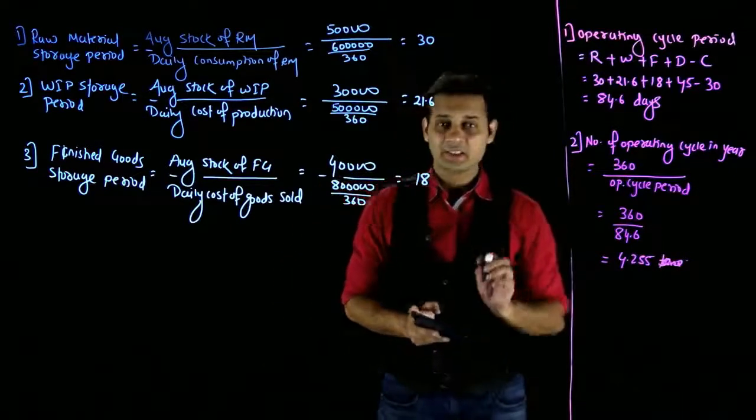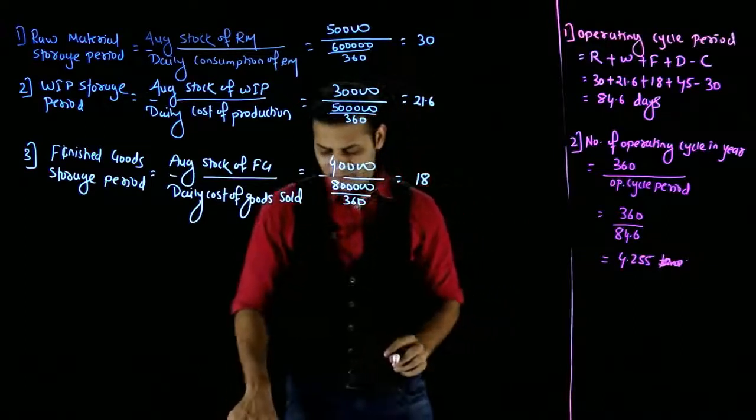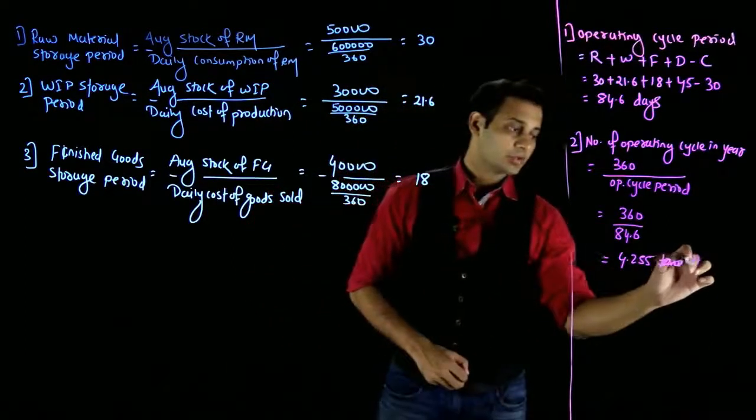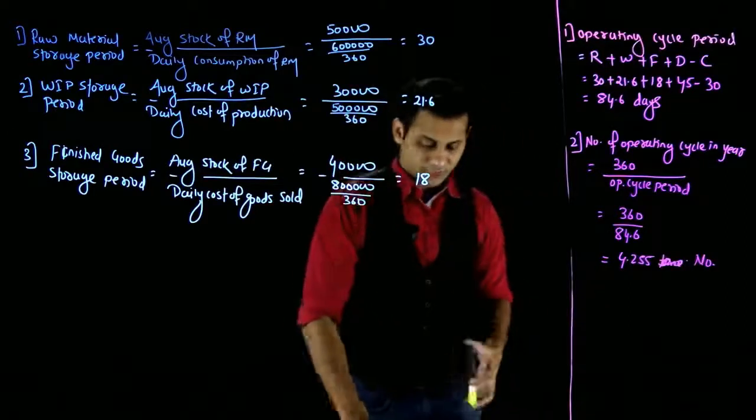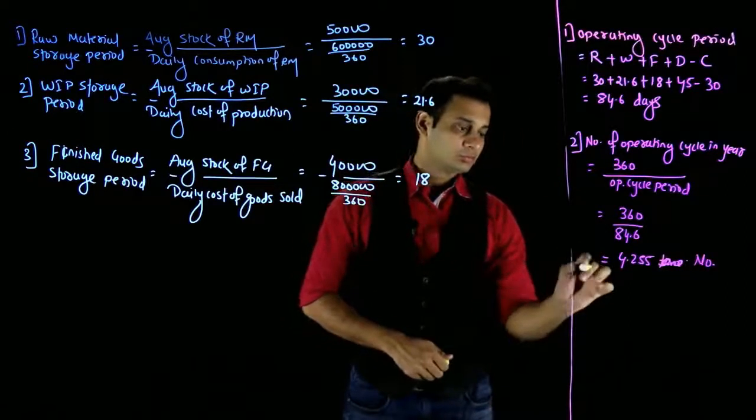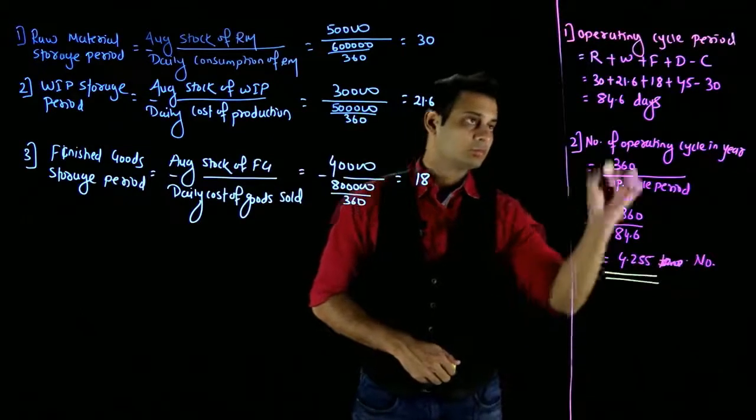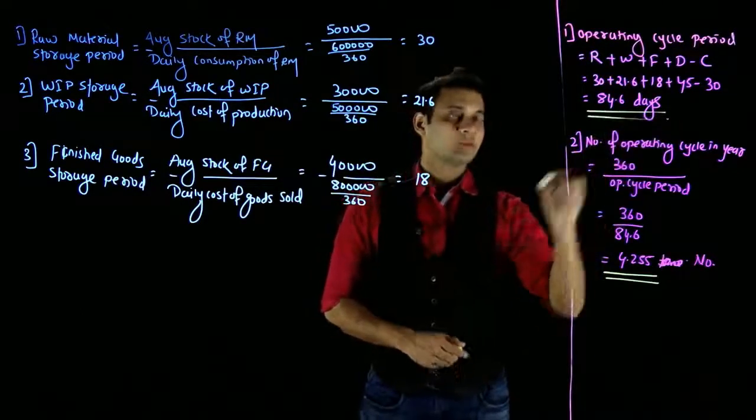4.255 operating cycles complete. Times will not come, the number will come. So these are your two answers, you can note down these answers. I hope you understand the question.